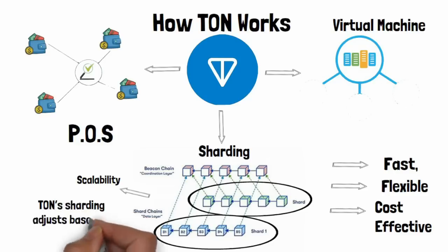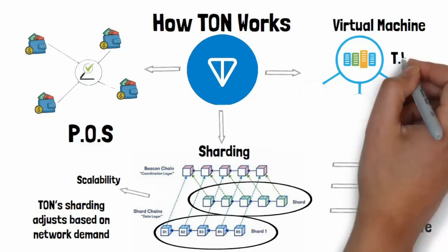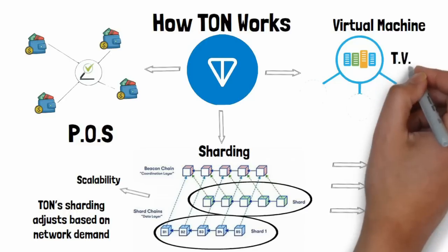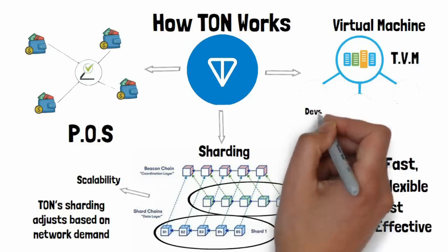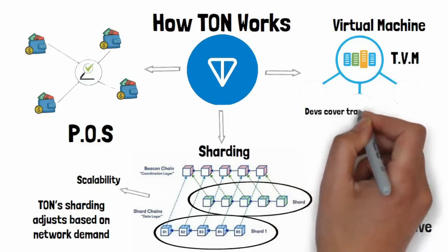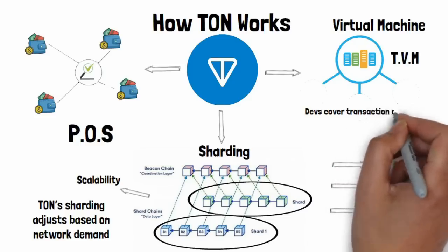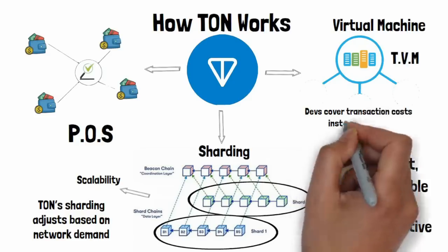TON's dynamic sharding even adjusts based on network demand, making it incredibly scalable. Another standout feature is the TON Virtual Machine, or TVM. Unlike traditional blockchains, TVM charges developers to cover transaction costs instead of users, making it easier and more affordable to use smart contracts.